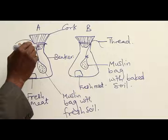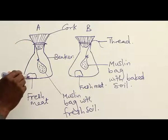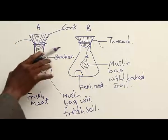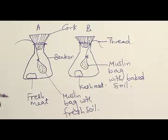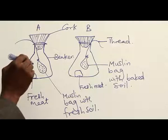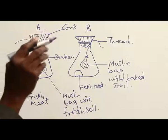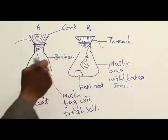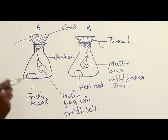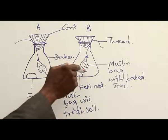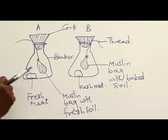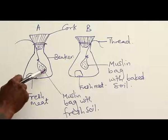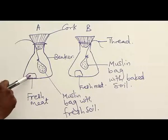Now, the piece of meat is in the beaker. The beaker is supposed to have been sterilized before this experiment. So, if there are going to be any microorganisms in the environment, they are going to come from this soil. The fish is now in this environment of the beaker. Inside the fresh soil, if there are microorganisms, they will affect this meat and it will go rotting.